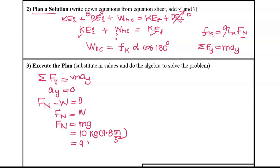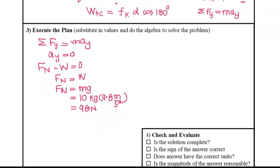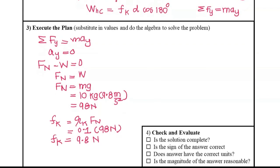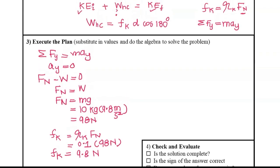Now I'll use this normal force to solve for the kinetic friction force. Kinetic friction force equals coefficient of kinetic friction times normal force: 0.1 times 98 newtons equals 9.8 newtons. That's the magnitude of the kinetic friction force.